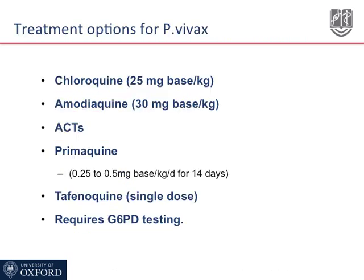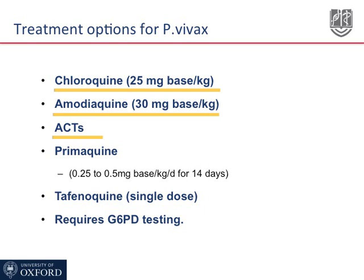For the treatment of Plasmodium vivax, chloroquine and amodiaquine will be effective in most of the world; in areas where chloroquine resistance has emerged, ACTs will be effective. Radical cure for P. vivax requires a longer course of primaquine or a single dose of tafenoquine, which is still under development. However, these drugs require testing for G6PD deficiency because they can cause hemolysis in people with this inherited red blood cell disorder.